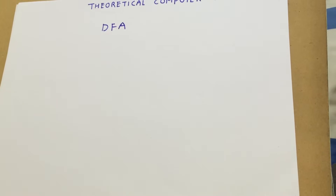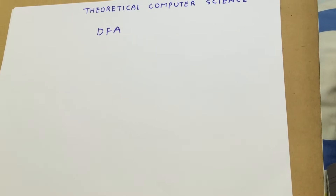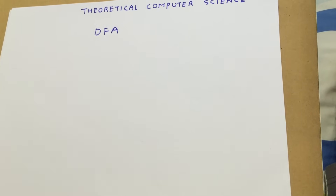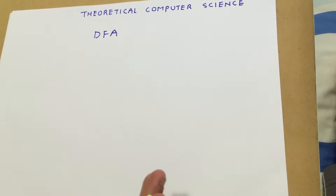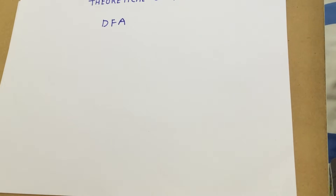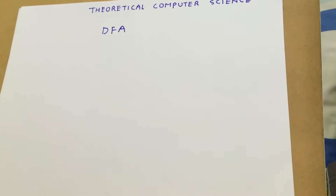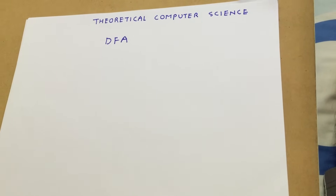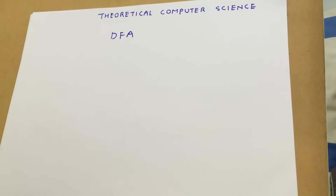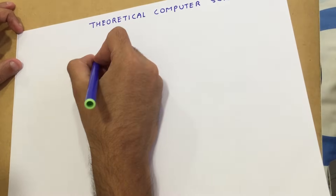Today we are going to see problems of DFA. The problems in DFA are basically divided into four types: strings ending with, strings starting with, the substring type, and the divisibility type. I am going to cover a couple of these in this video, starting with strings ending with.